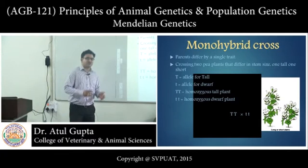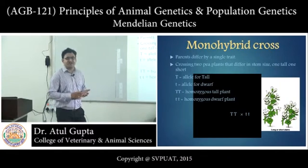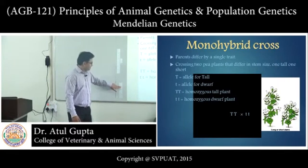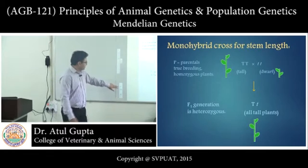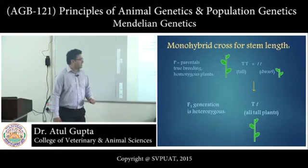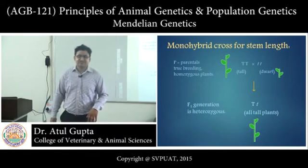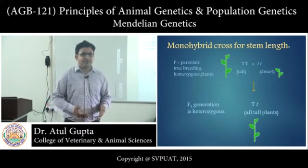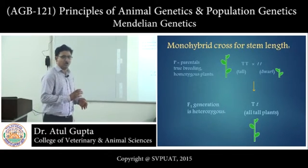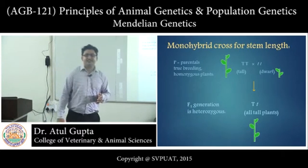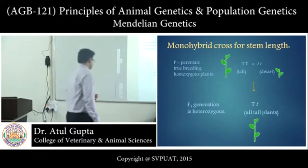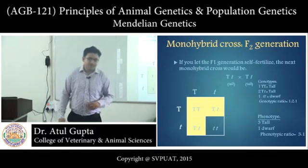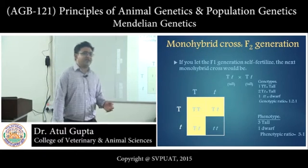When we cross the capital T capital T genotype with the small t small t genotype, then in the F1 generation we will have all plants which are tall by phenotypic appearance — phenotypically they will be tall, but their genotype will be capital T small t; those will be heterozygous.